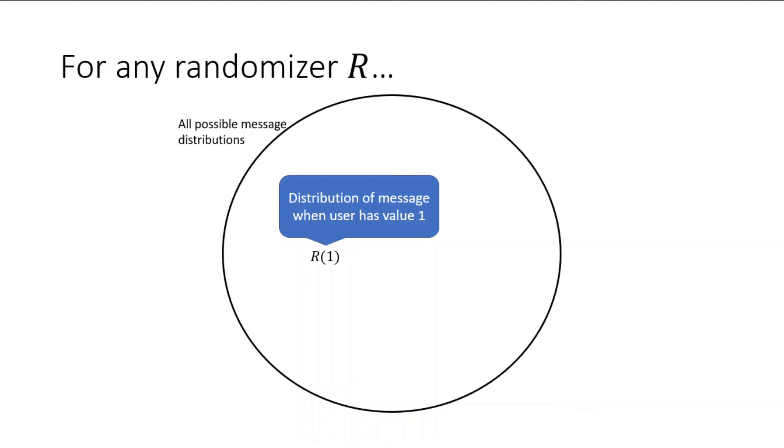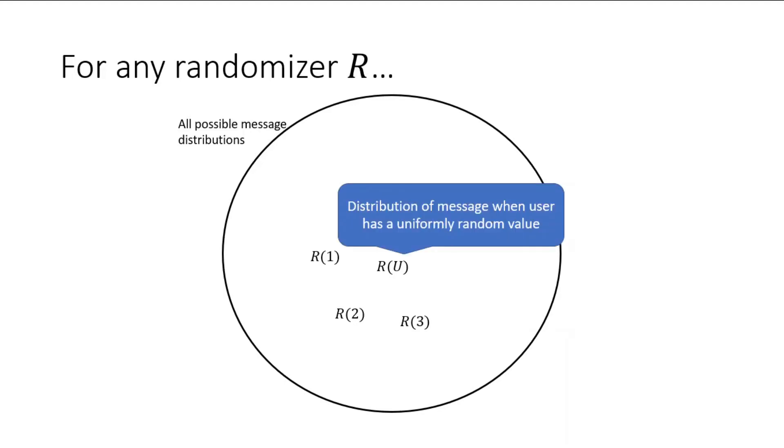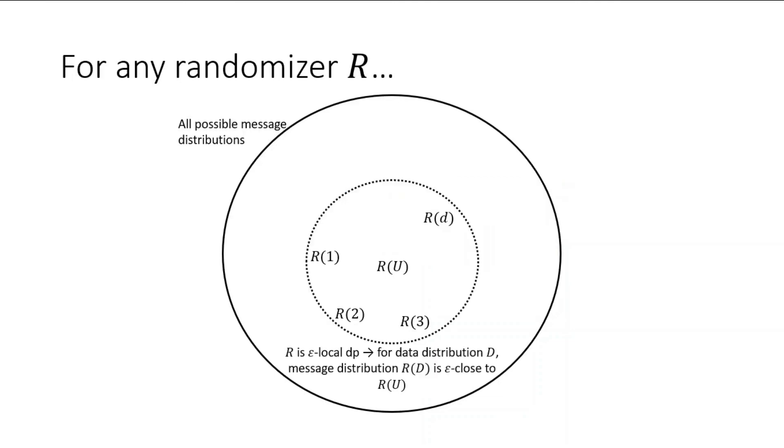We will adapt our original attack to larger dimensions. Because messages are not always one-dimensional, we will instead use a ball to visualize the set of all possible message distributions. R of 1 will be one point in this ball, where R of 1 is the message distribution when the input is 1. Same for R of 2, R of 3, and so on until R of d. We can also define R of u, which is the distribution of the message when the user has a uniformly random value. Local privacy means that all of the randomizer's message distributions are all epsilon close to R of u. These distributions need to be similar to be private.